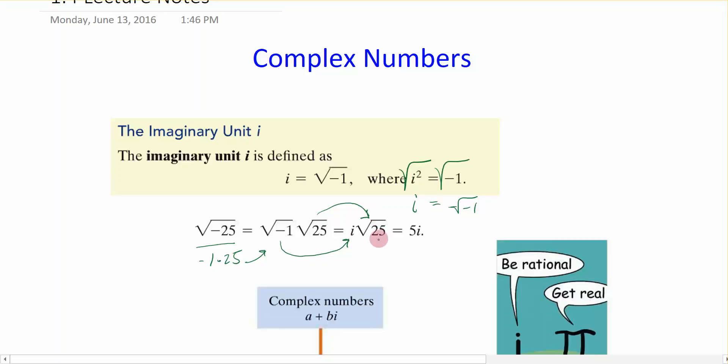The square root of 25 is 5, so we can simplify the square root of negative 25 as 5i, which is shown here.